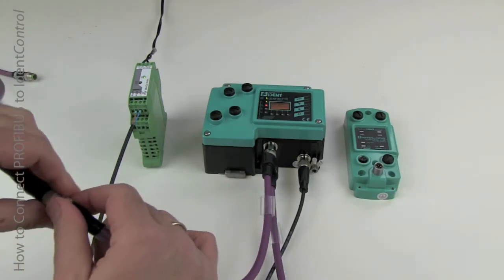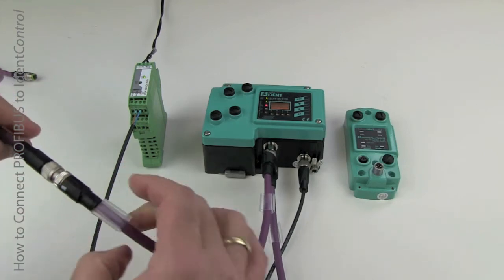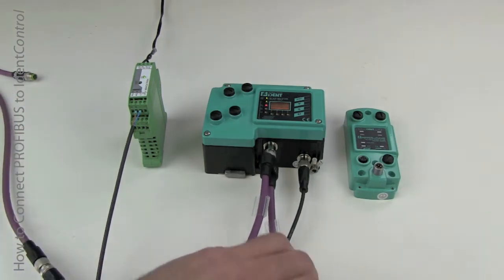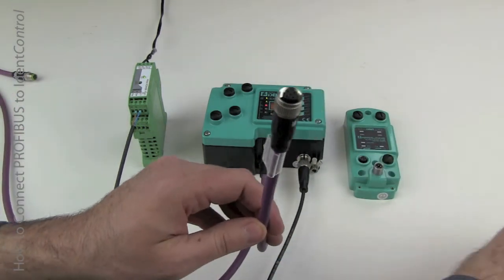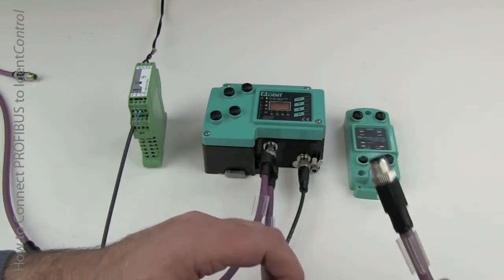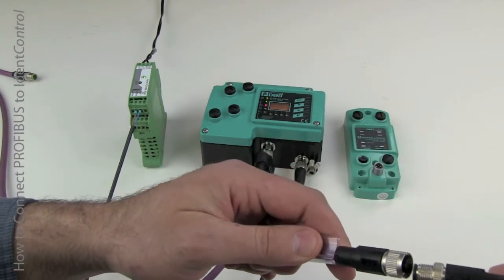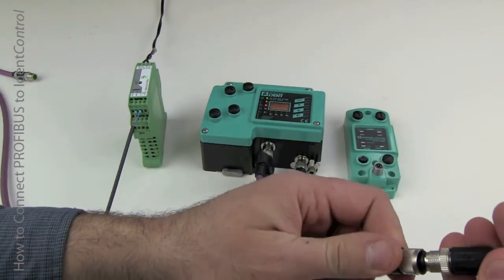Now, in this case, you cannot just simply attach a termination resistor to the outgoing side if the Profibus out connection is not used. I'm going to show you in a second here what we're going to do, in that case, if this is the last node of the network.